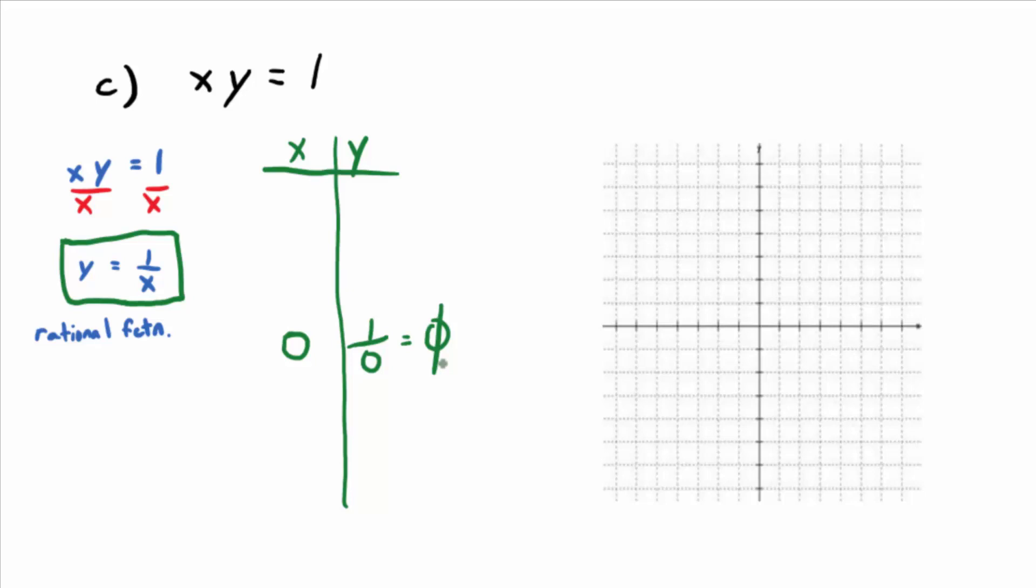But you know what? It's not a bad suggestion in the sense that maybe we should plug in something less than zero, some things less than zero, and maybe some things bigger than zero, right? So let's try again. What would be some easy values to plug in?